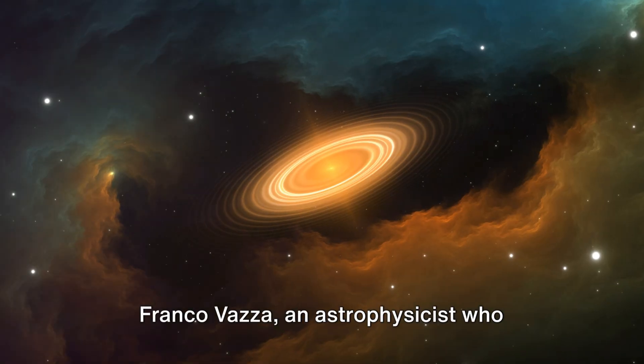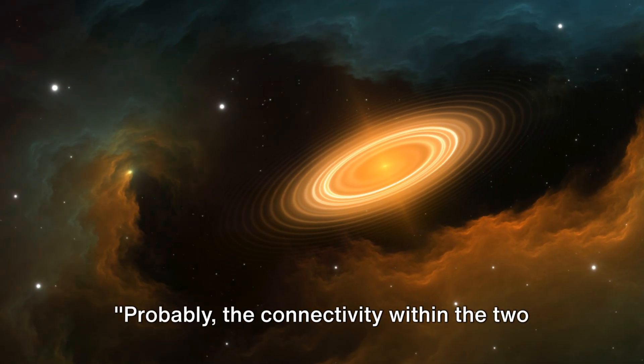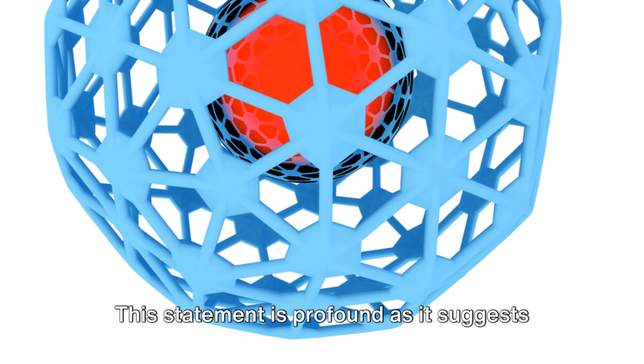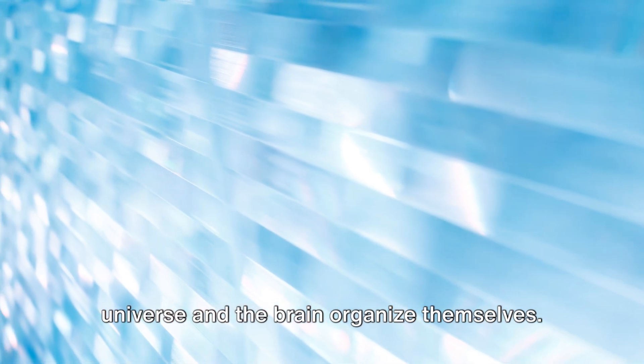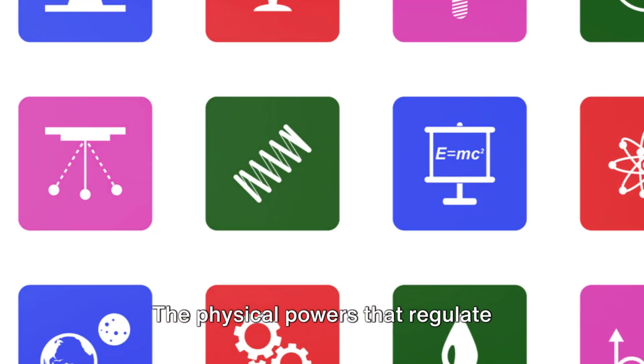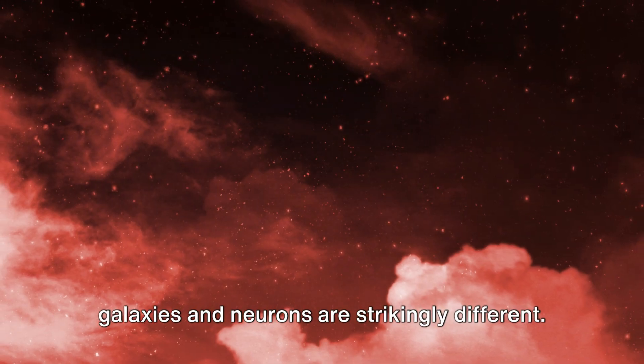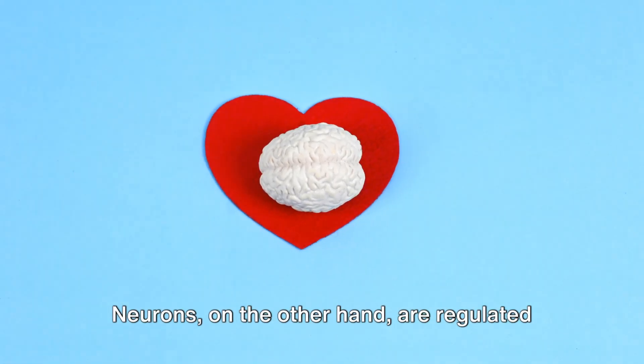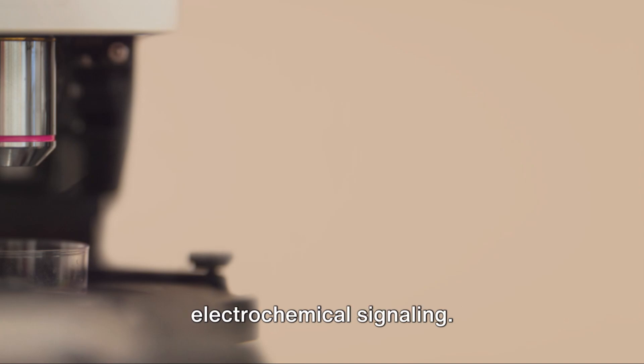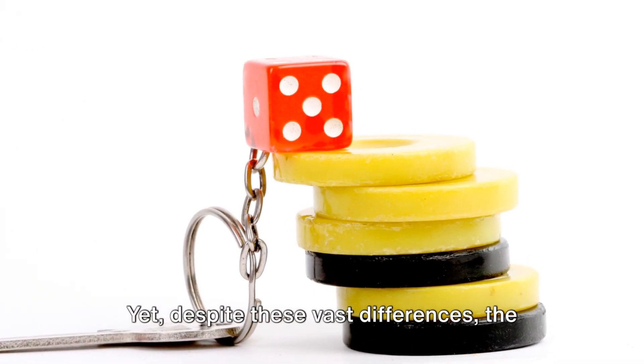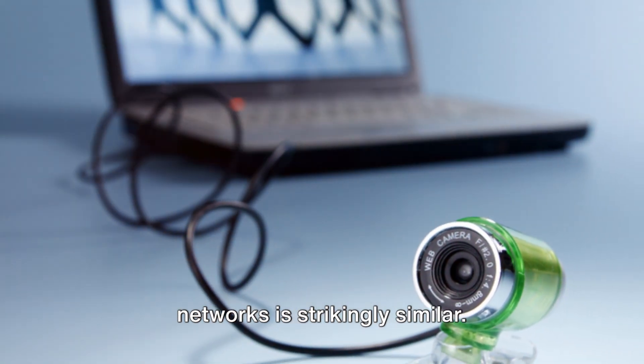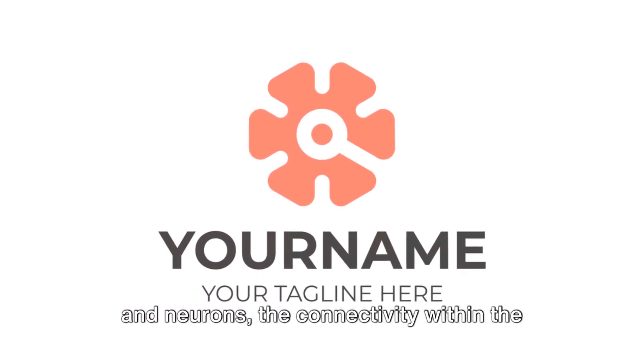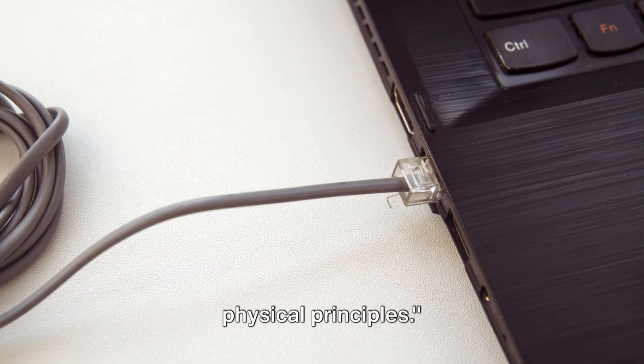Franco Vazza, an astrophysicist who worked closely on the study, remarked: probably the connectivity within the two networks evolves following similar physical principles. This statement is profound as it suggests a fundamental similarity in how the universe and the brain organize themselves. The physical powers that regulate galaxies and neurons are strikingly different. Galaxies are governed by the laws of astrophysics including gravity and dark energy. Neurons are regulated by biological processes and electrochemical signaling. Yet, despite these vast differences, the way they connect within their respective networks is strikingly similar.